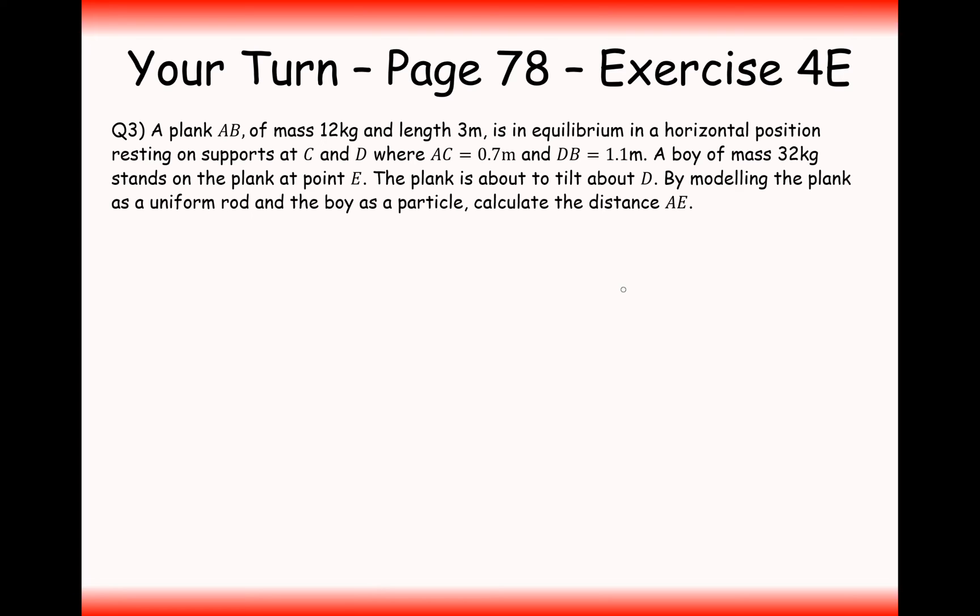Let's have a go at this question then. We have a plank from A to B of mass 12 kilograms. It's a uniform rod, great, so I can add in my 12g force in the centre. Length 3 metres, so that would be 1.5 to each end. And we have a pivot point at C, which is 0.7 metres. So if it's 1.5 to the centre, this will be 0.8 metres. And we also have a pivot point at D, where this is 1.1 metres. And the distance from here to here must be 0.4.